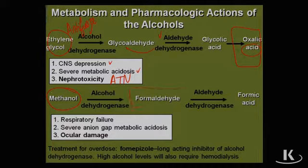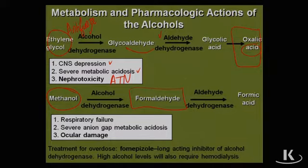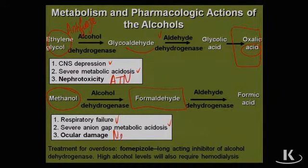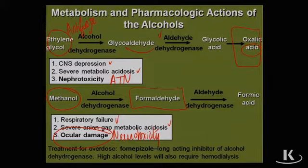Methanol is also metabolized by dehydrogenases, and here the primary unique metabolite is formaldehyde. Formaldehyde is used regularly in pathology to pickle and preserve tissues. Imagine this being formed in your own tissues — particularly in your brain. Besides CNS depression with the potential for respiratory failure and severe metabolic acidosis, there is also significant neurotoxicity, and patients may suffer significant optic nerve and retinal damage resulting in blindness.